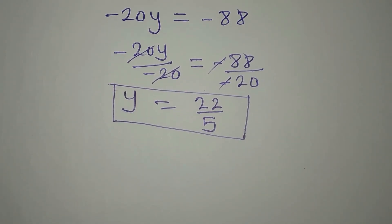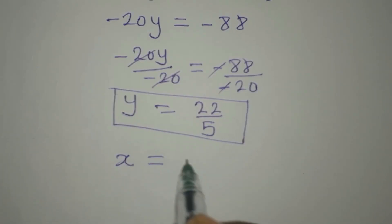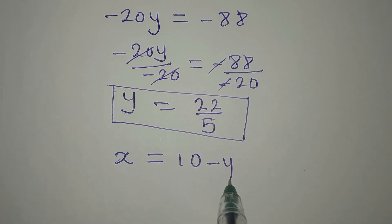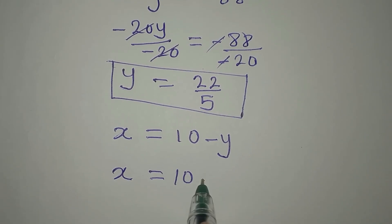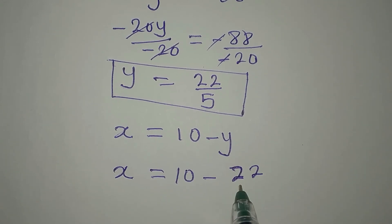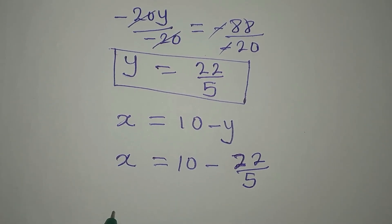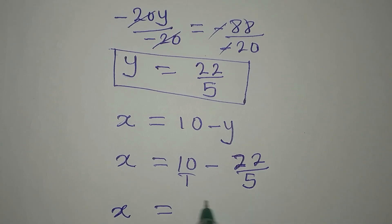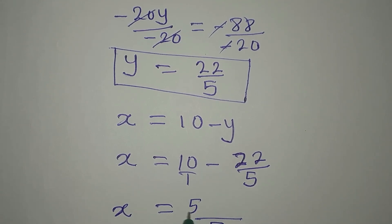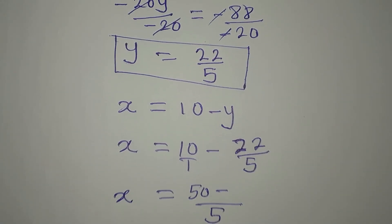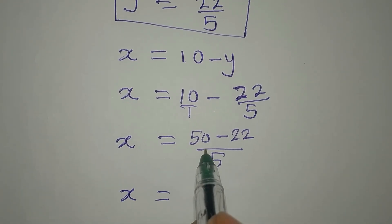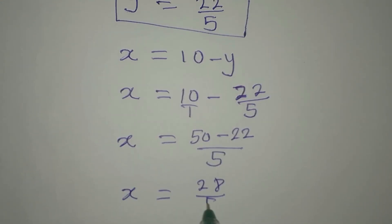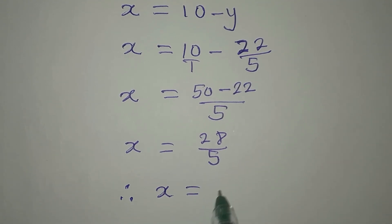Now using equation 3, x equals 10 minus y. Substituting y equals 22 over 5: x equals 10 minus 22 over 5. Finding the LCM — 10 over 1 becomes 50 over 5, then minus 22 over 5. So x equals 50 minus 22 over 5, which gives x equals 28 over 5.